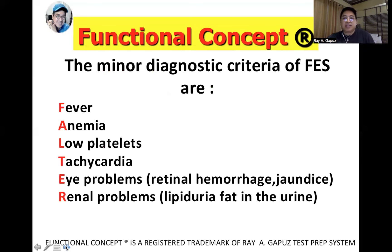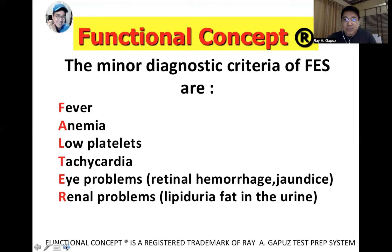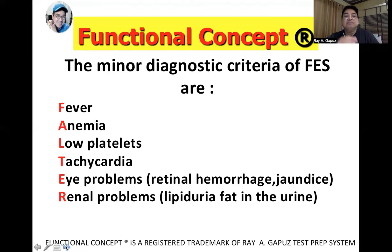The minor diagnostic criteria of fat embolism syndrome are remembered with the acronym FALTER: fever, anemia, low platelets or thrombocytopenia — which predisposes the client to bleeding — tachycardia, eye problems specifically the presence of blood spots in the retina or retinal hemorrhage, jaundice, and of course the presence of renal problems, specifically the presence of fat in the urine.